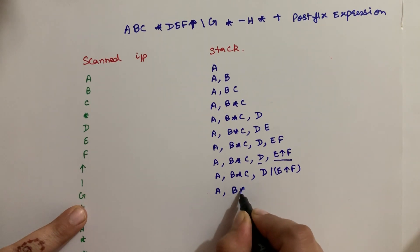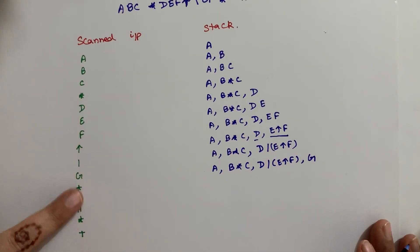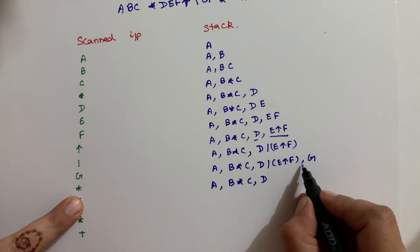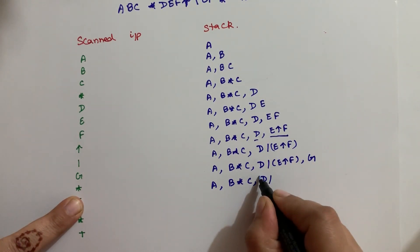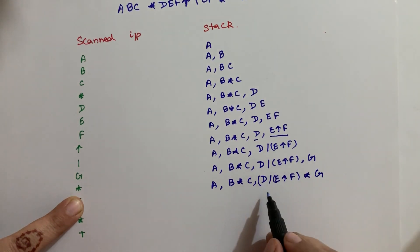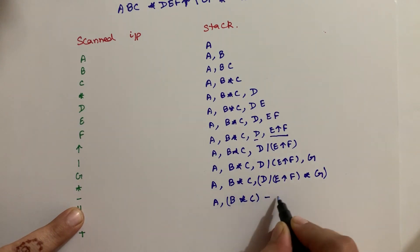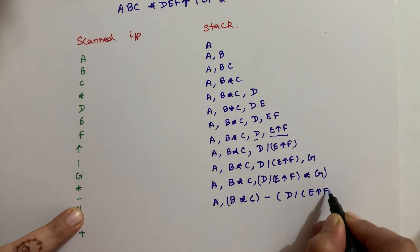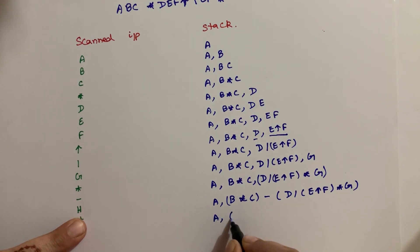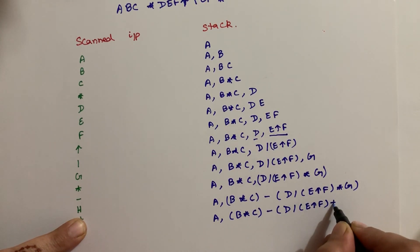Then G comes — stack has A, B into C, then D division E raised to power F, and G. Then multiplication comes — this multiplication is between the top two elements, so you can put a bracket: D division (E raised to power F) multiplied by G. Then minus comes — this becomes: A, B into C, minus D division E raised to power F into G. Then H comes — output is A, B into C, minus D division E raised to power F into G, and H.